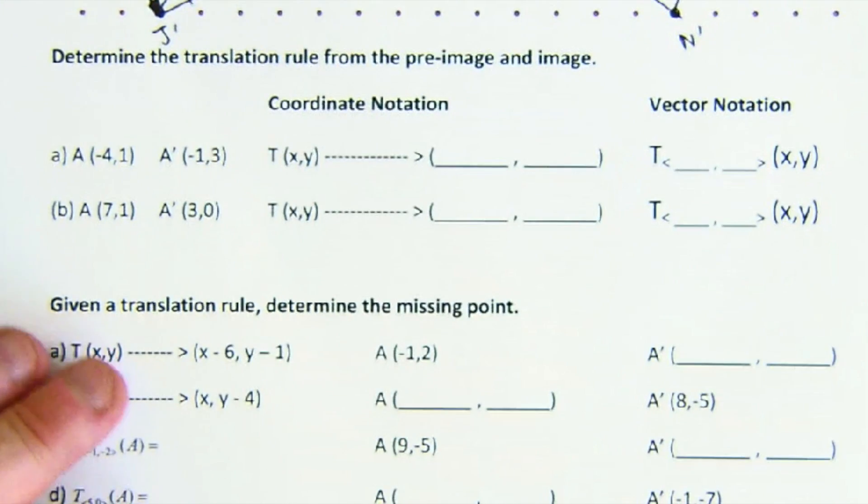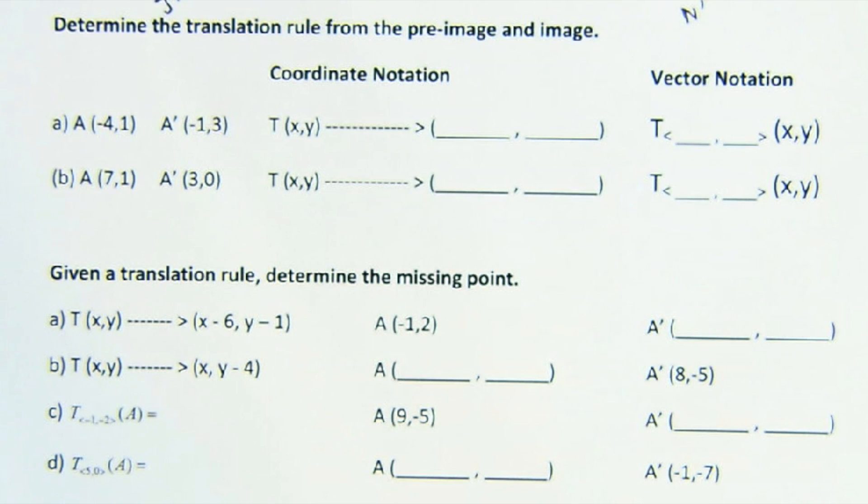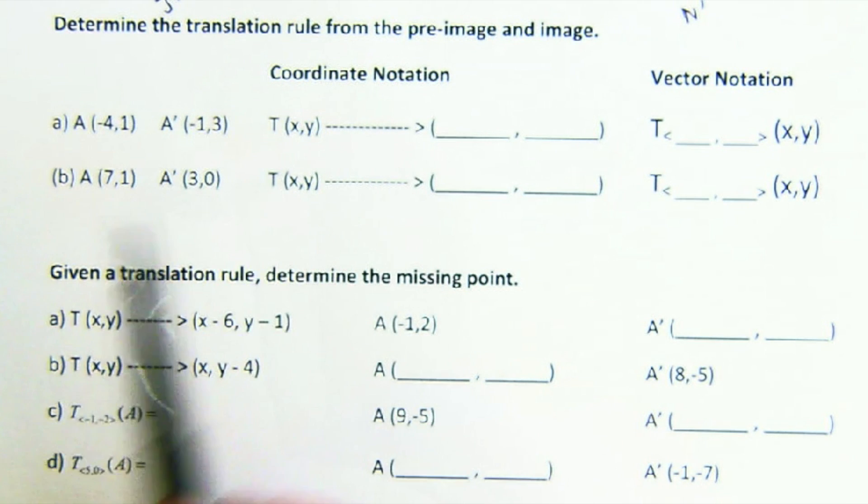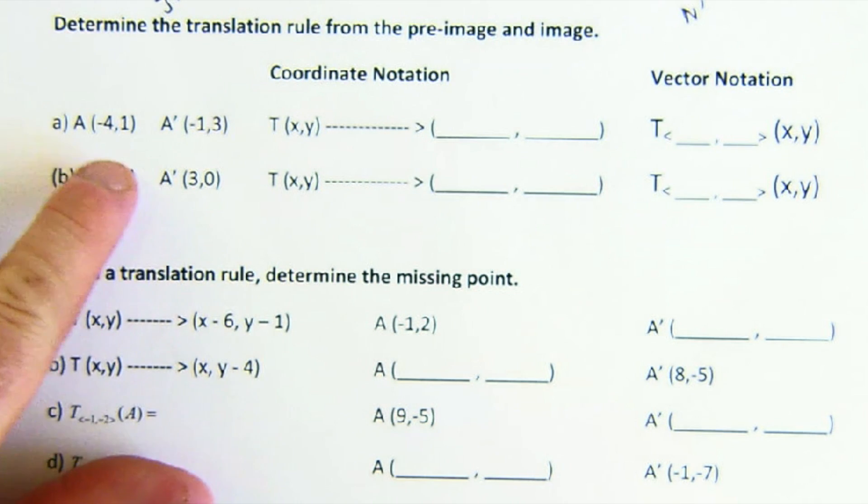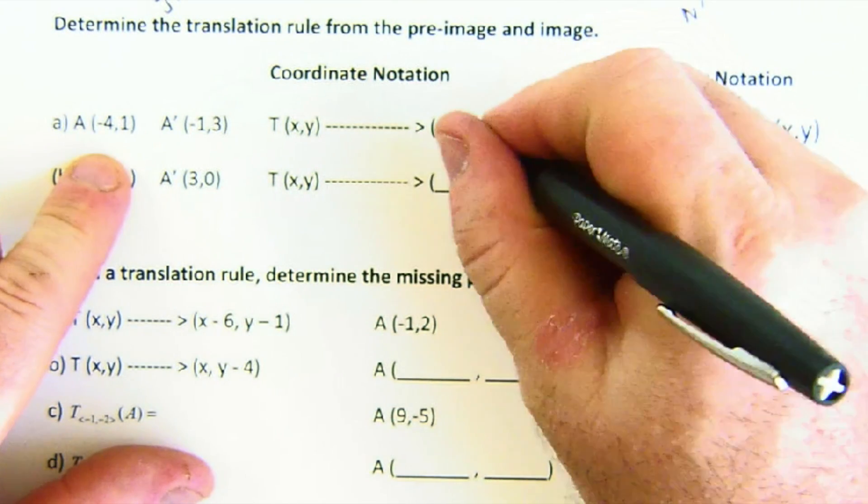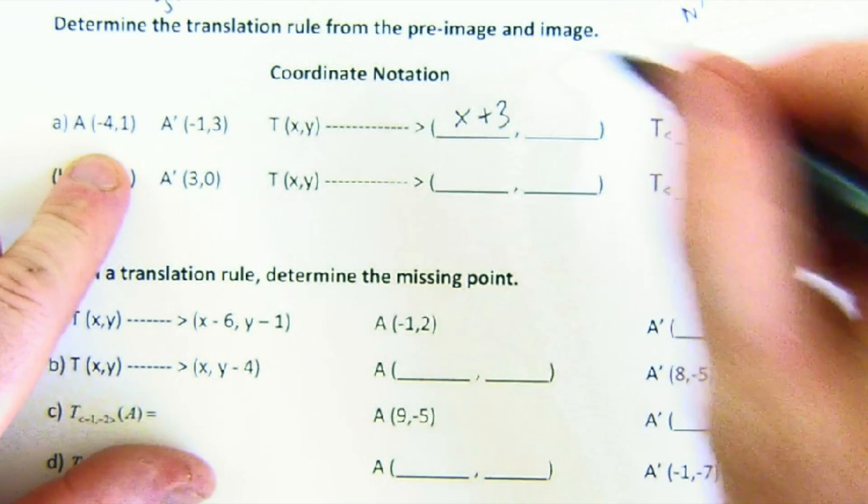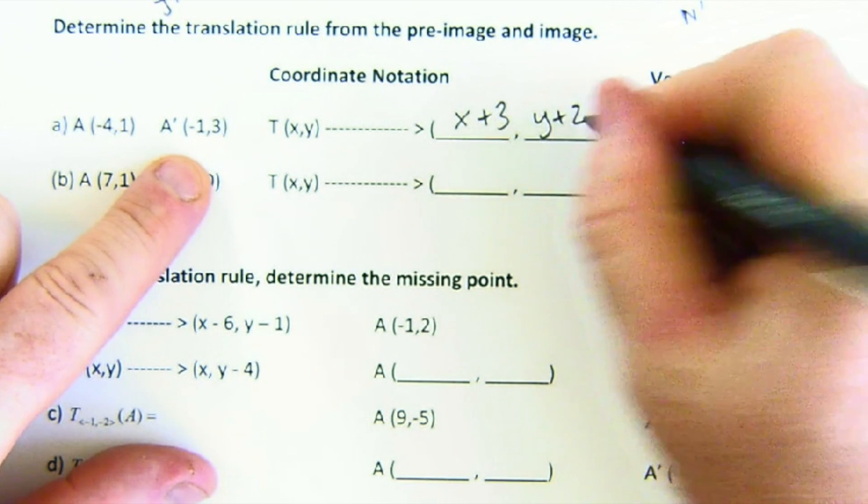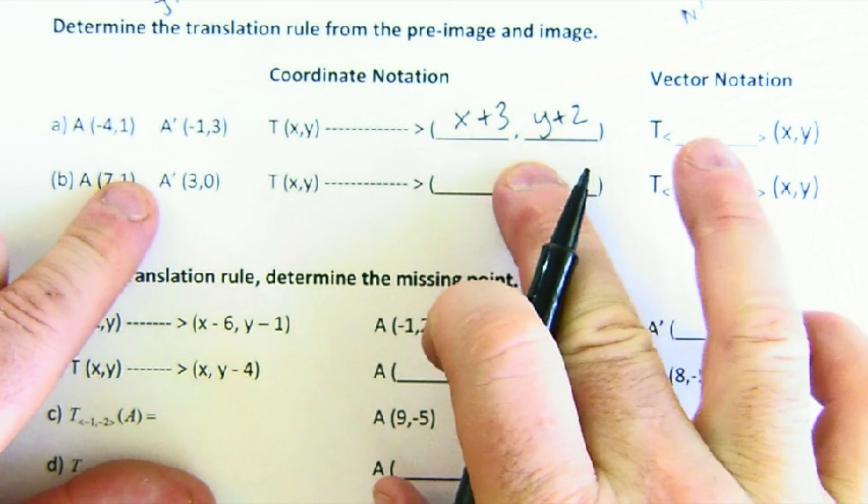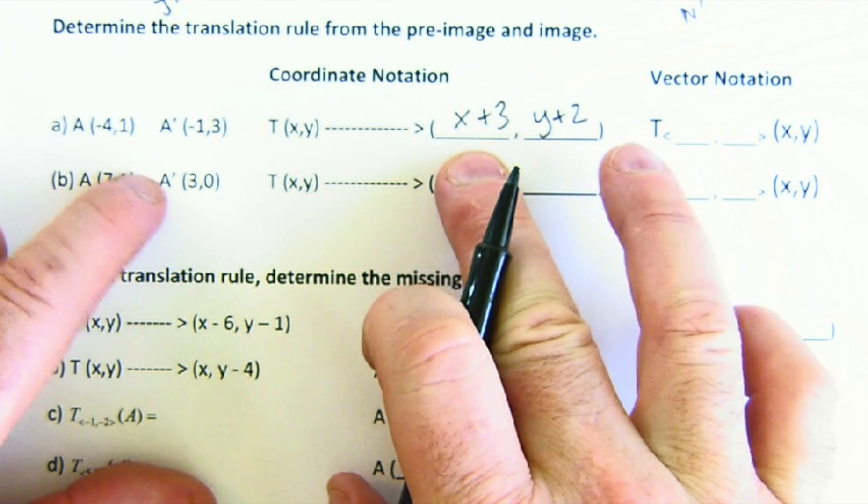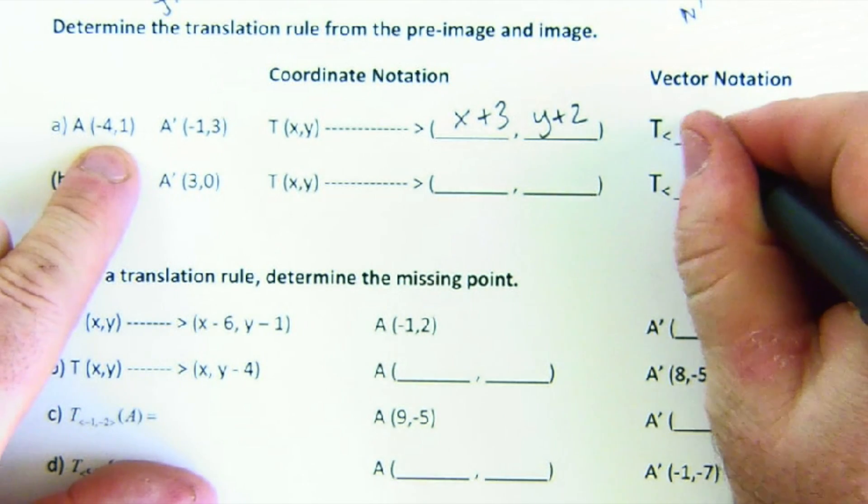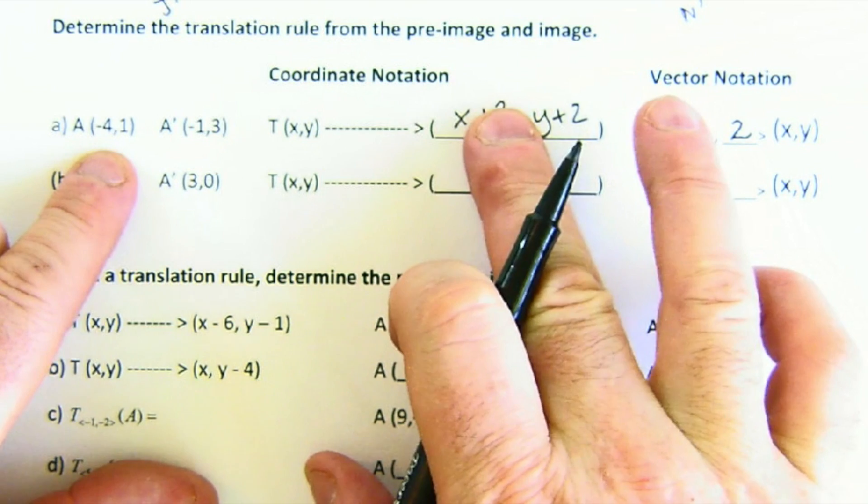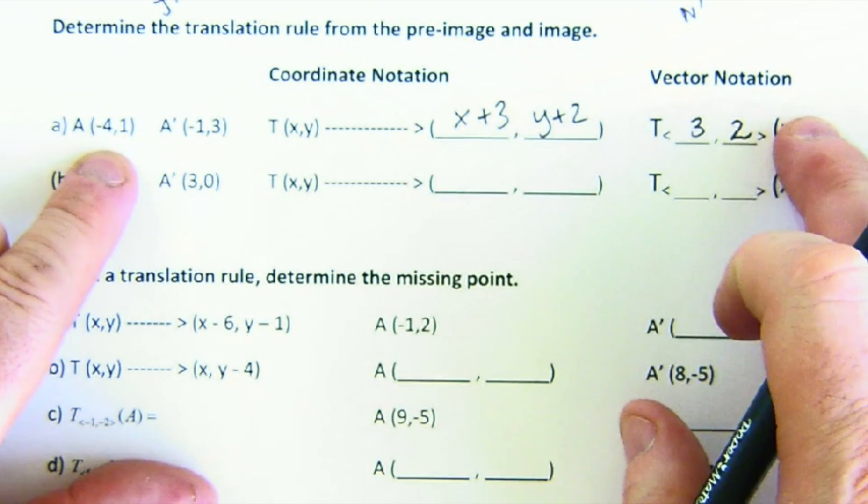Another way to describe what's taking place in a translation is called a coordinate rule. So they tell us that a translation takes place from a to a prime, and they want to know how did it slide there, what was the translation. So you can see that we went from negative 4 to negative 1. So we added 3 to our x value. And we went from 1 to 3, and we added 2 to the y value. So this is a coordinate rule that says add 3 to every x and add 2 to every y. This can also be described as the vector 3 right and 2 up. So this is called computation or coordinate rule notation. This is vector notation.